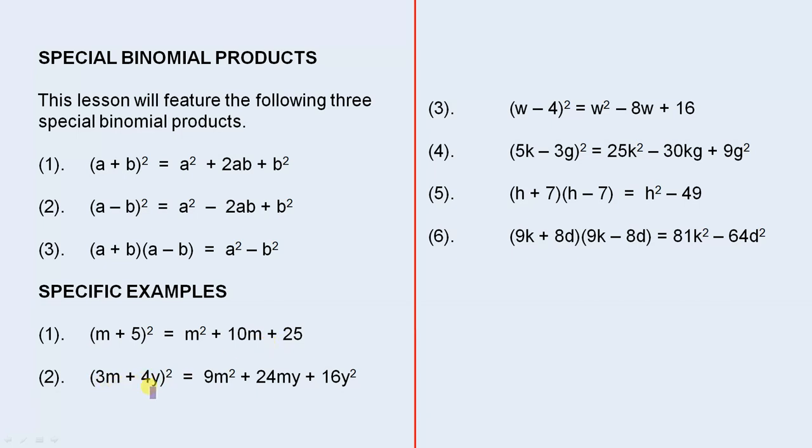In a similar manner, square the first, 9m². Multiply them together to give you 12my and double it, that's 24my. And square the second term which gives you 16y².